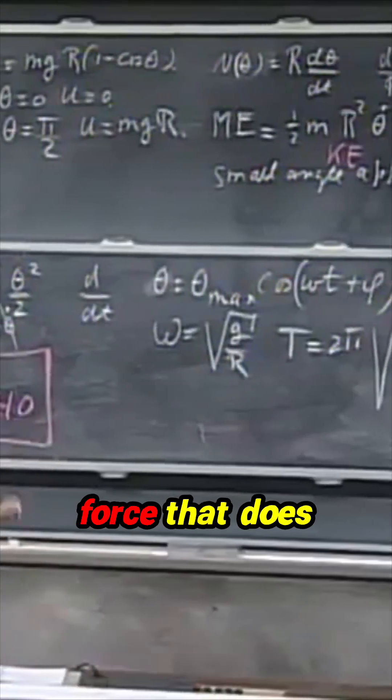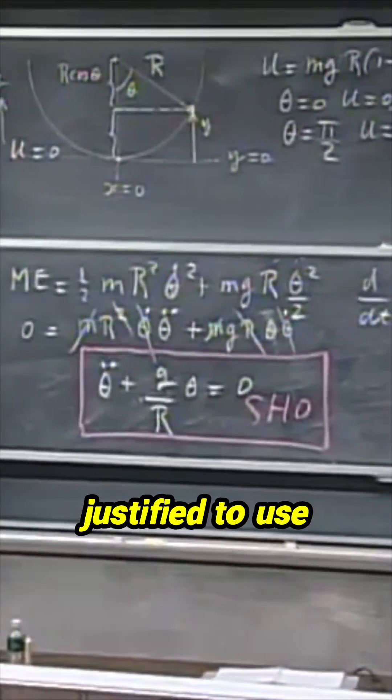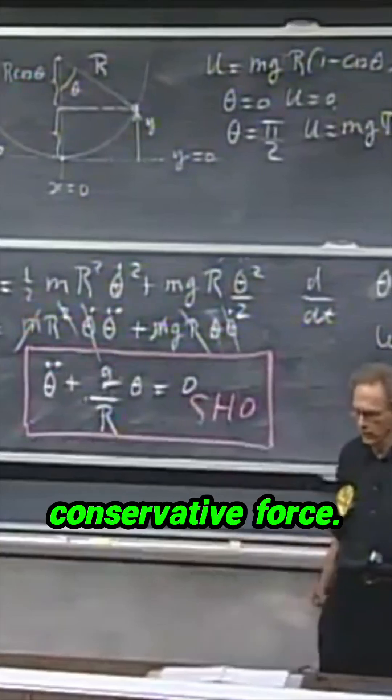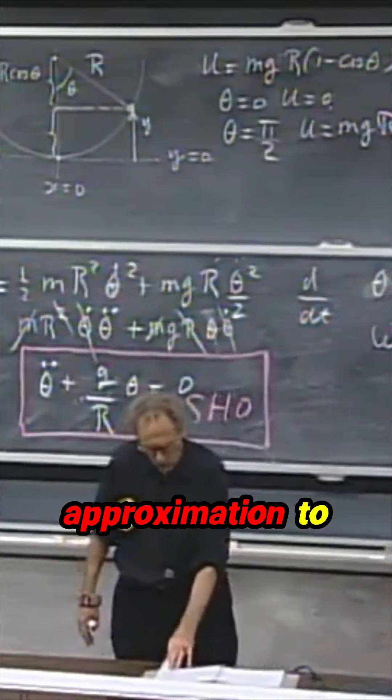Gravity is the only force that does work, and so it is justified to use conservation of mechanical energy because gravity is a conservative force. We used the small angle approximation to make it work.